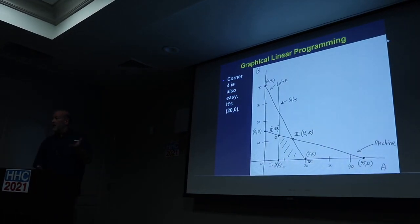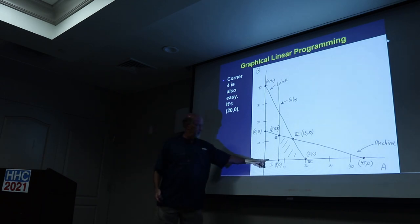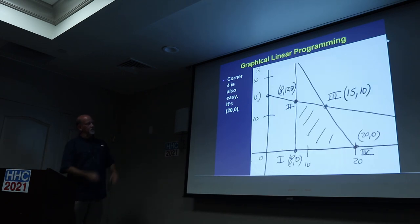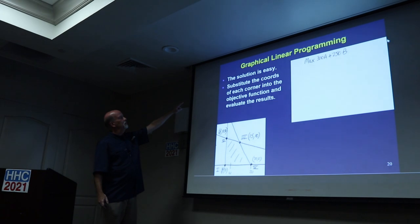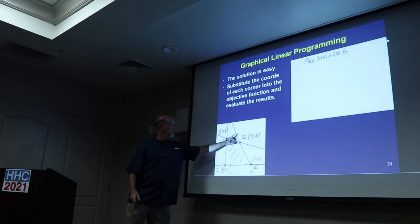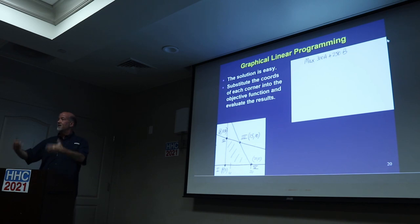So we had 15 comma 10. So then you go back to the graph and you plug them in. The third one was the intersection of the labor constraint and the machine time constraint. We got 15 comma 10. This one's also easy, 20 comma 0. So one of those four points is the answer. One of these four is the best.